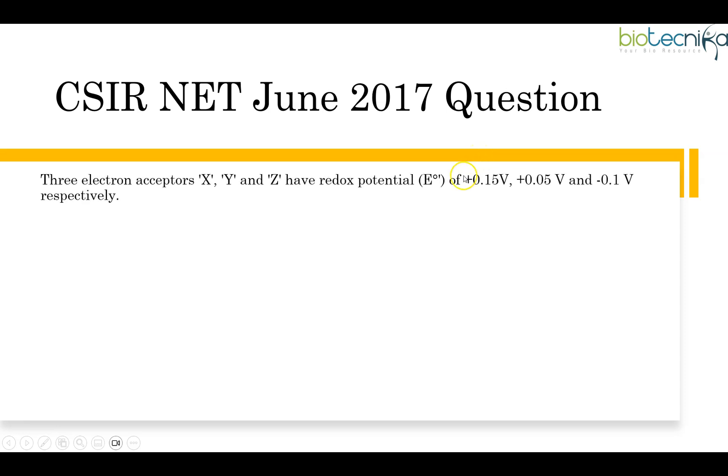Next question is from June 2017 question paper. Three electron acceptors X, Y and Z have redox potential of +0.5V, +0.05V and -0.1V respectively. They are given a reaction. So this is where electrons are accepted by B, B + 2H⁺ + 2e⁻ → BH₂ and the standard reduction potential for this is +0.05 volt. So which of these electron acceptors are appropriate? We know that for redox reaction, if we have an oxidation reaction, we should also have a reduction reaction as well.